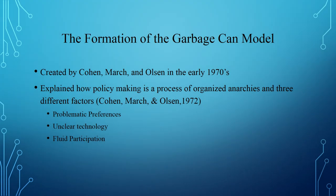The garbage can model was created by Michael Cohen, James March, and Johan Olson in 1972. They wrote about it in "A Garbage Can Model of Organizational Choice," which explained how policy making is really a process of organized anarchies and the result of three factors: problematic preferences, unclear technology, and fluid participation.